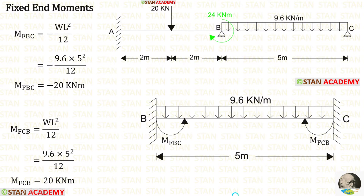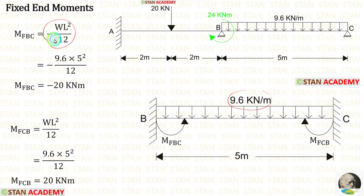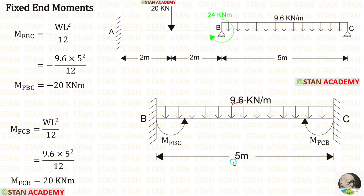Now let us find the fixed end moments in span BC. In span BC there is a uniformly distributed load of 9.6 kilo Newton per meter acting for the full span. The formulas to find the fixed end moments are minus WL squared upon 12 and positive WL squared upon 12. Here W is 9.6 and L is 5. When we apply the values inside the formulas we get M of BC and M of CB.